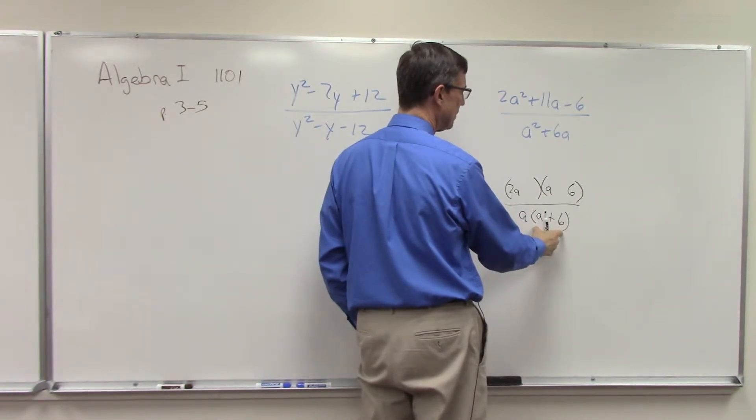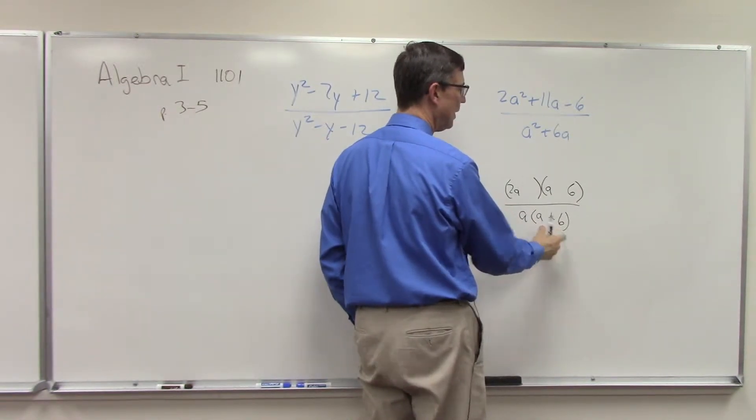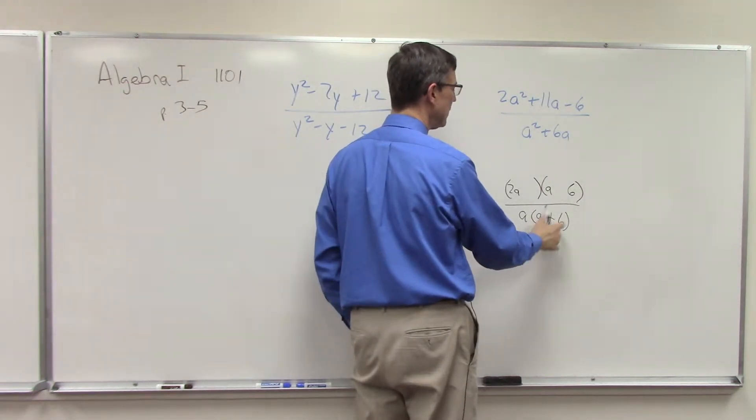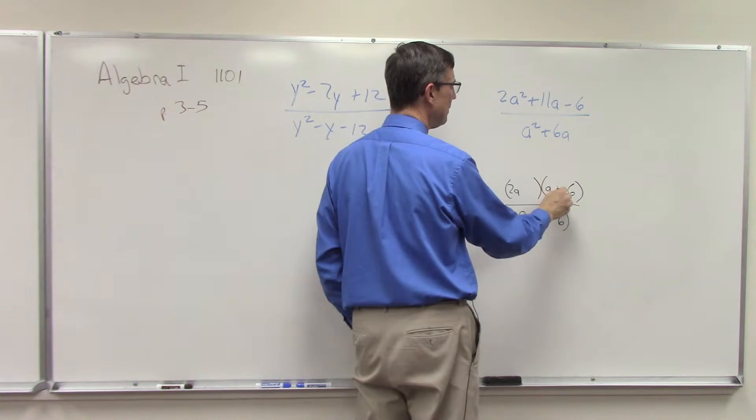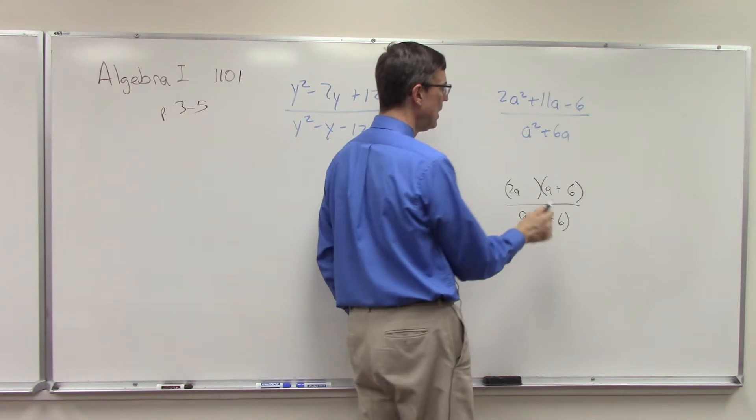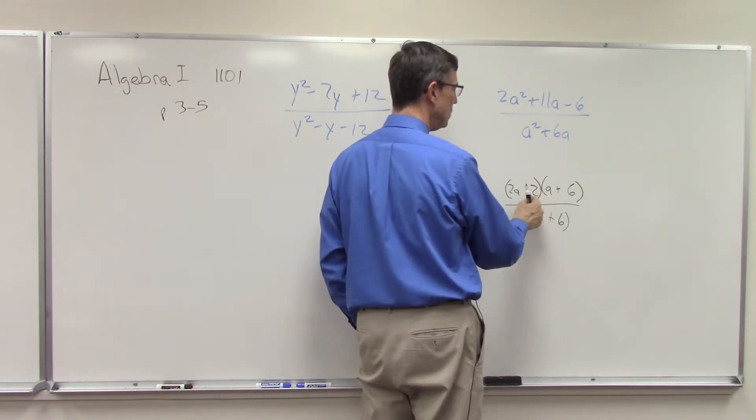Another clue that I had is I do see a plus 6 down here. Sometimes that kind of guides you to say, you know what, they're probably going to have something that cancels. So if I know this is a plus 6, my guess is that's probably going to be a plus 6, and now that helps guide me to figure out what this one should be, and 2.